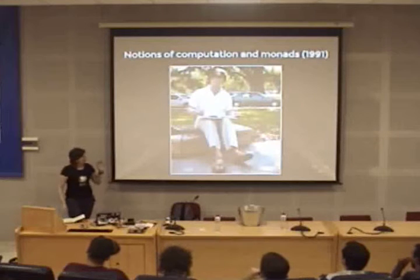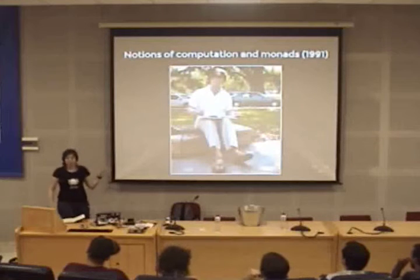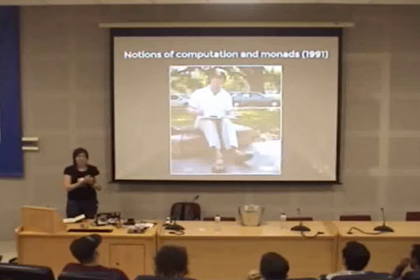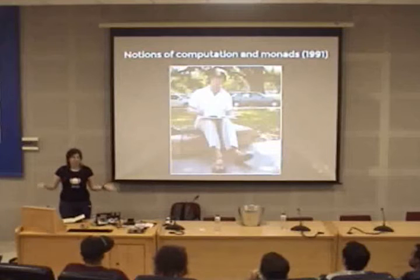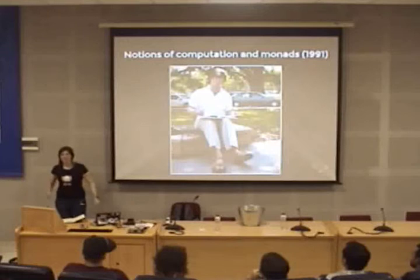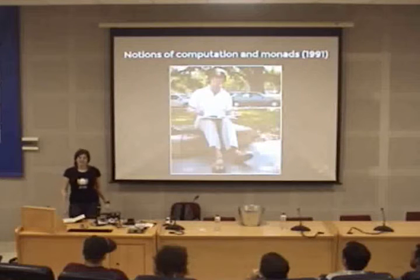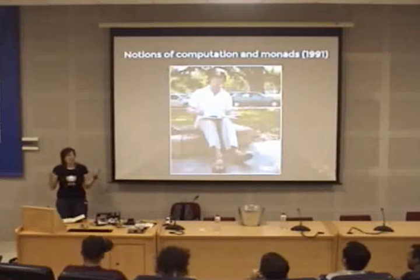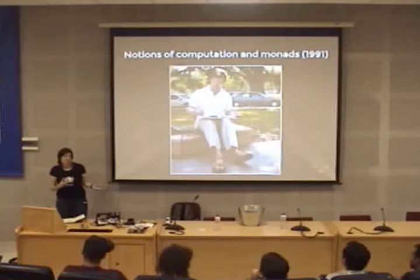This guy is called Eugenio Moggi, and the paper is called 'Notions of Computation and Monads' from 1991. I did what everybody else would do: downloaded the paper, started reading it, and went — okay, I don't really get this — because I found loads of maths with symbols that were slightly different to what I expected.